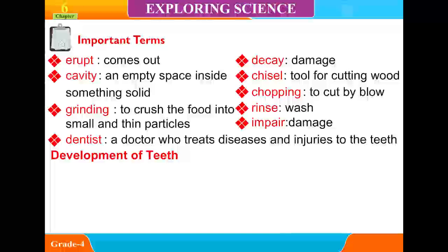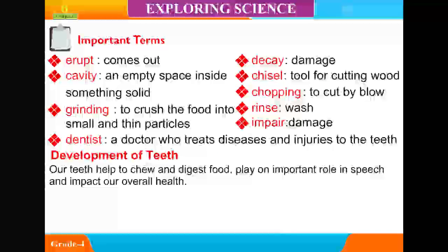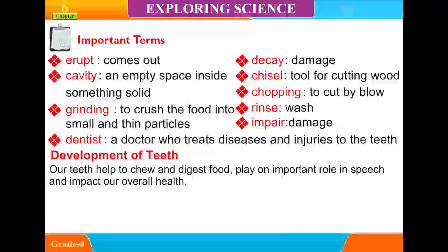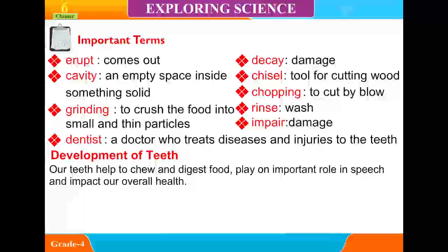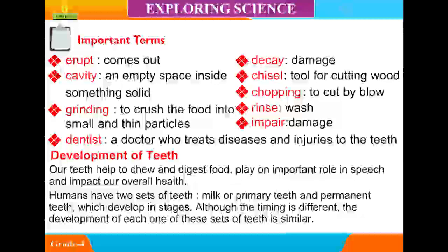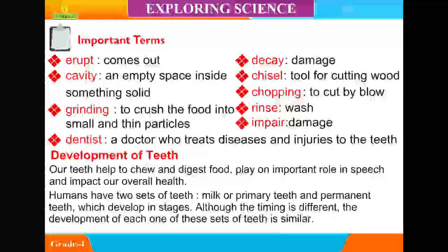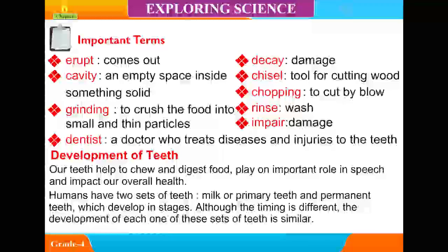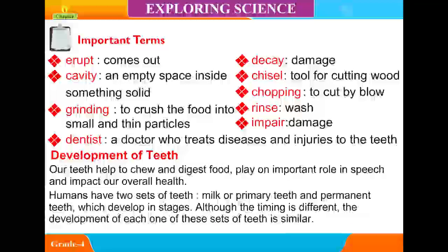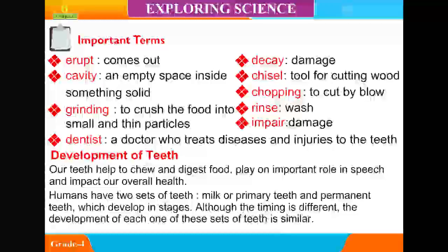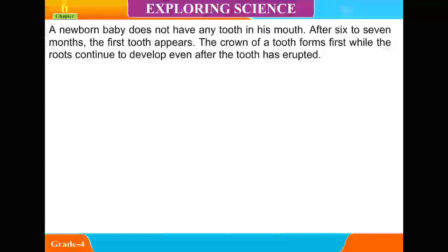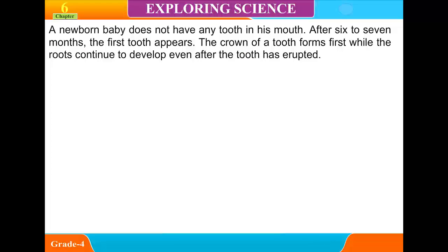Development of Teeth. Our teeth help to chew and digest food, play an important role in speech, and impact our overall health. Humans have two sets of teeth — milk or primary teeth and permanent teeth — which develop in stages. Although the timing is different, the development of each one of these sets of teeth is similar. A newborn baby does not have any tooth in his mouth.